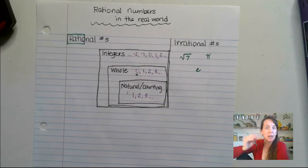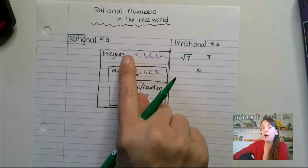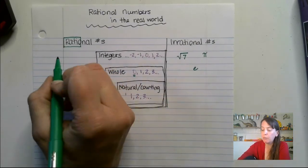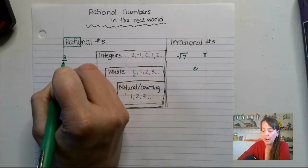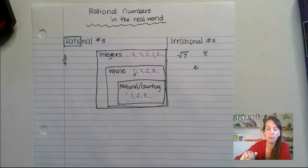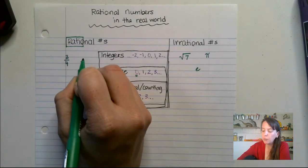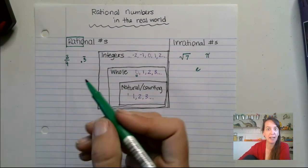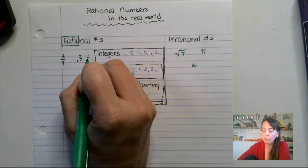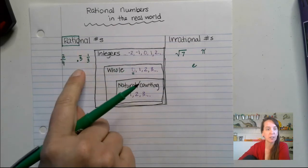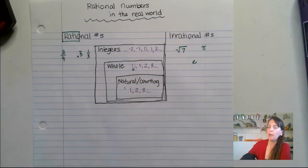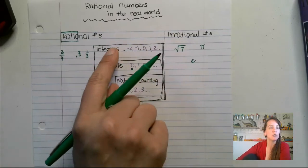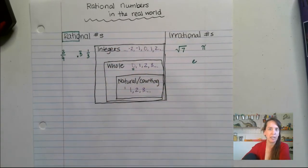Now other numbers can be rational and not fall into one of those categories. Things like 3 fourths. That's written as a fraction, so that's definitely a rational number. 0.3 with a line repeating over it can be written into a fraction as 1 third. Therefore, it's a rational number because it can be written as a fraction. For things like that, for fractions and decimals, those are not going to be considered integers, whole numbers, or natural counting numbers.